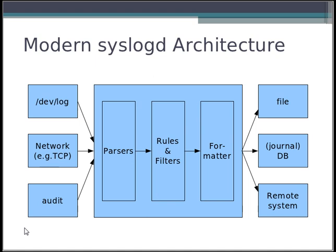If you look at a modern syslog daemon, we have three core areas. That is the input part, seen over here — I'll come shortly to the details — and it's the output part shown over here. And then right in the middle, there is some logic that handles messages.